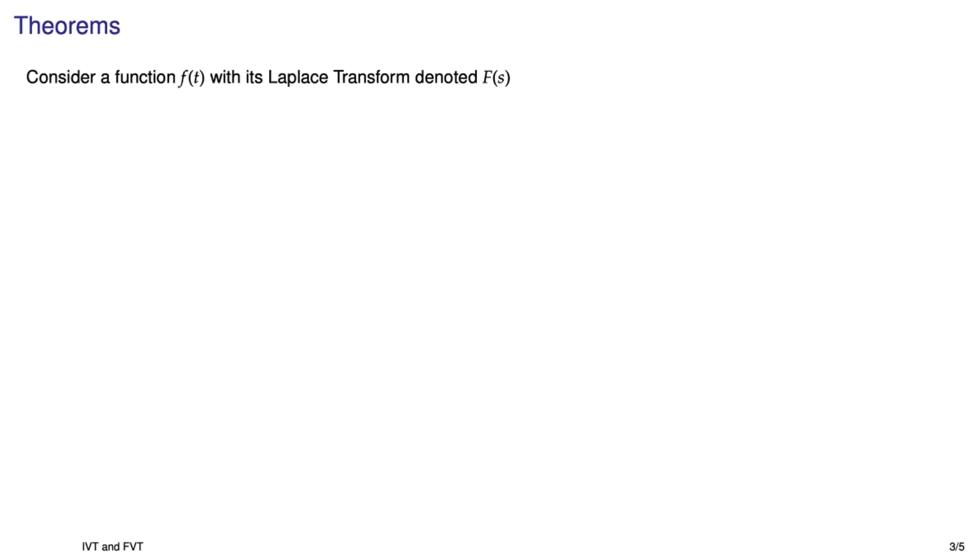So here we go. Consider you have some function f(t) and it has Laplace transform capital F(s). The initial value theorem goes like this: The initial value of that function f(t) is just equal to the limit as s goes to infinity of s times F(s). That theorem applies as long as that limit exists.